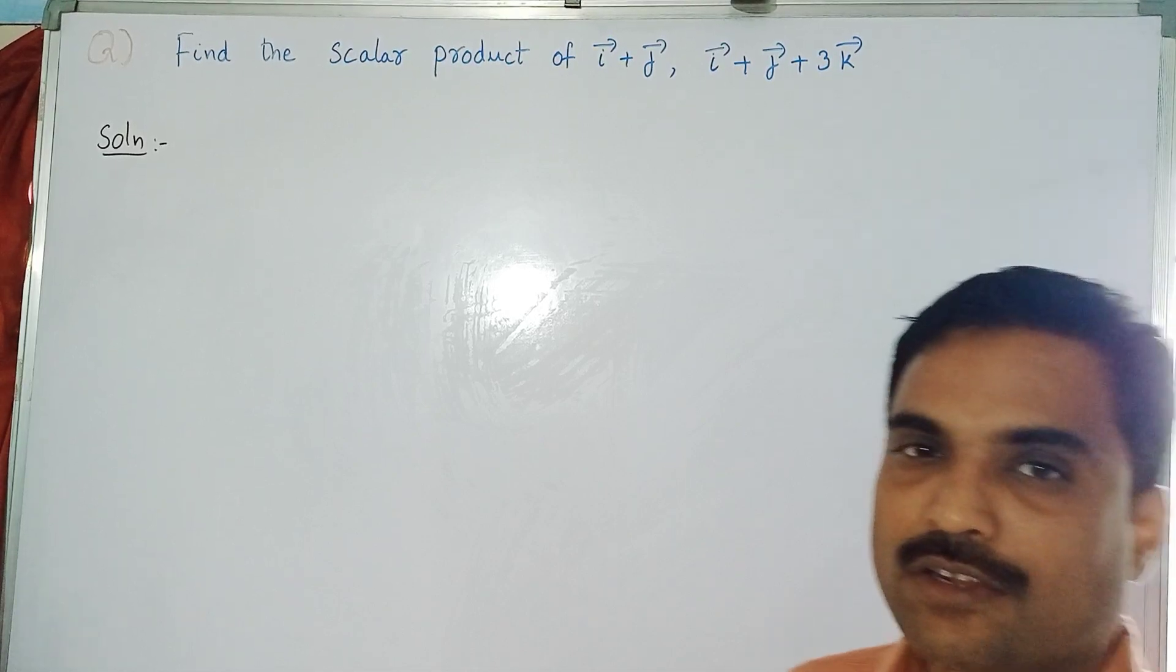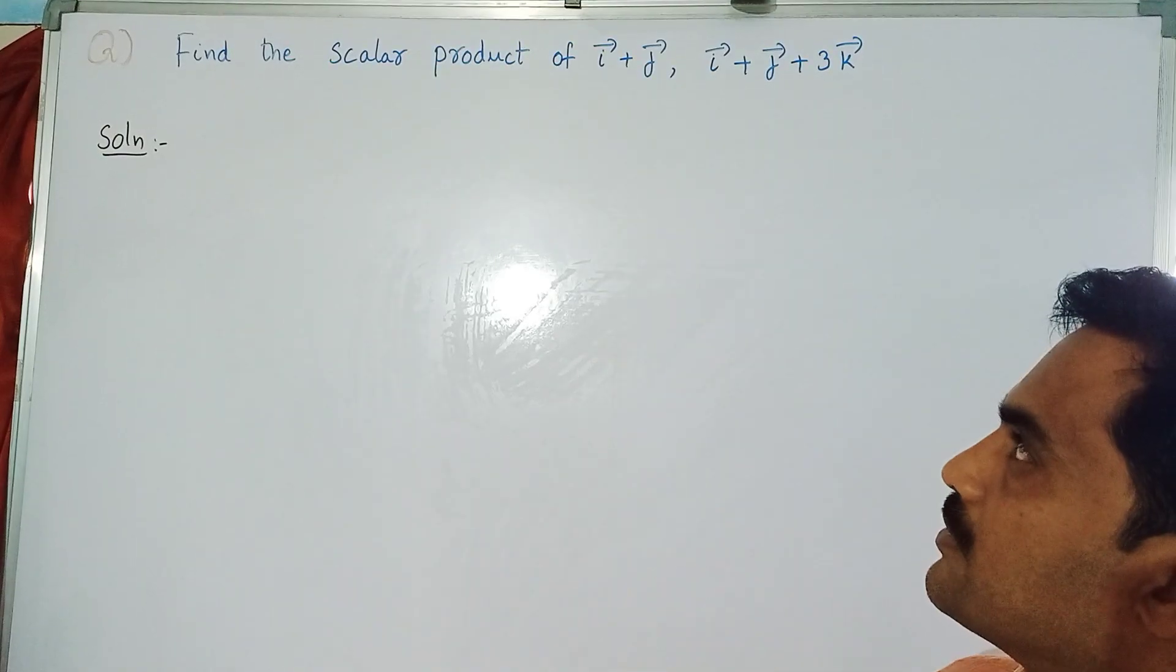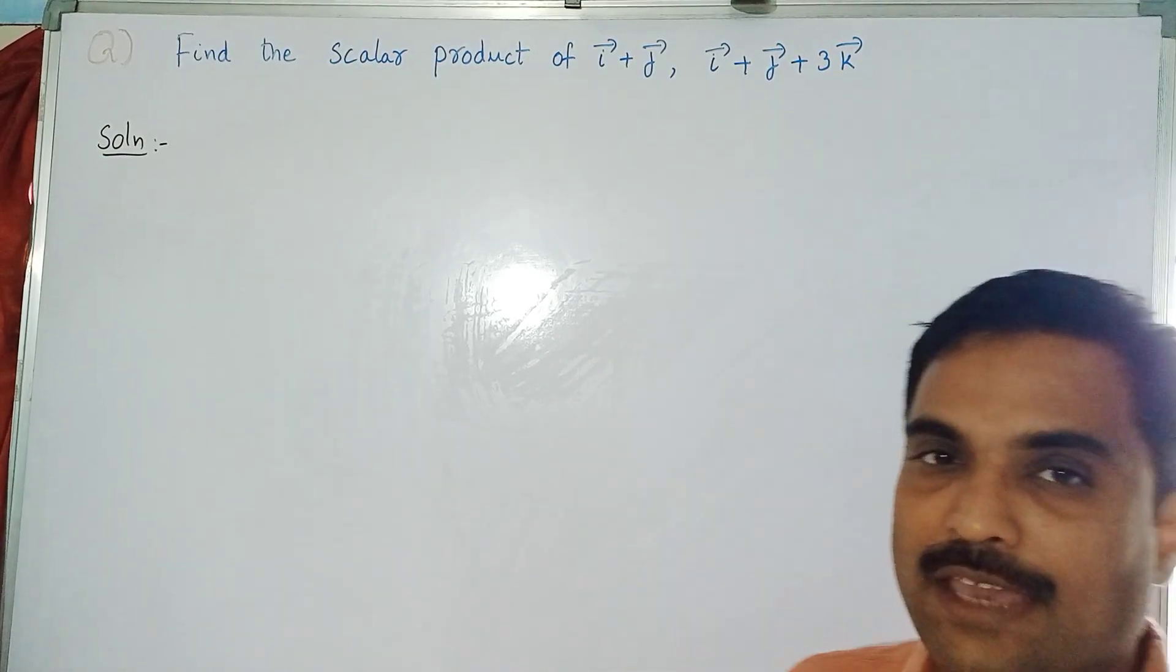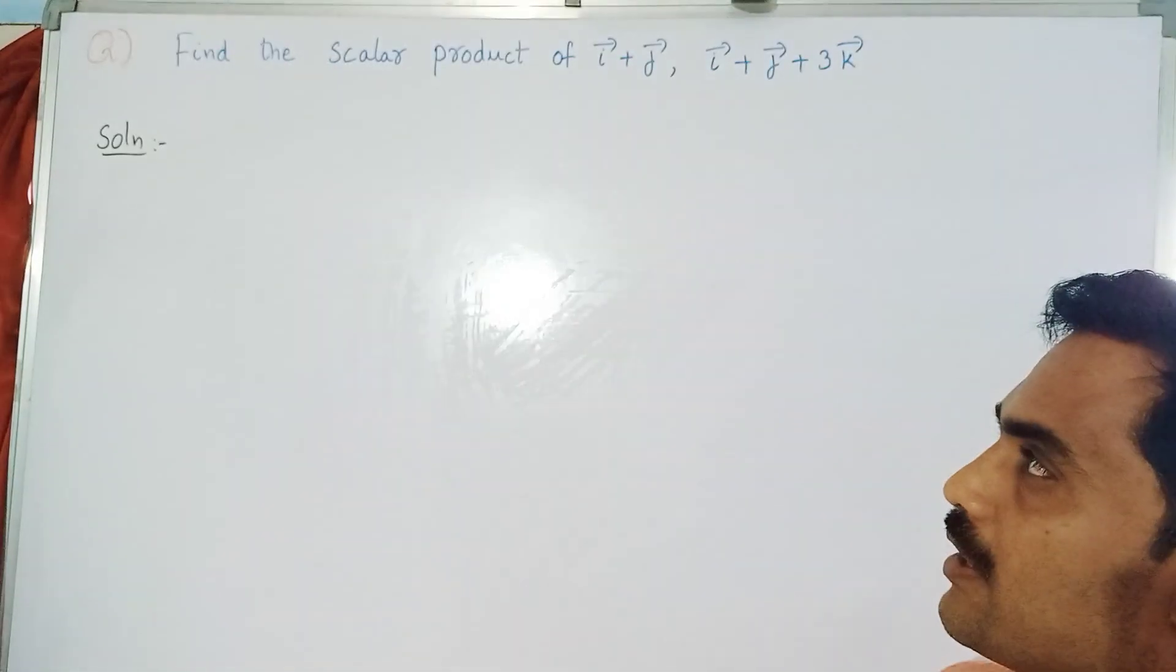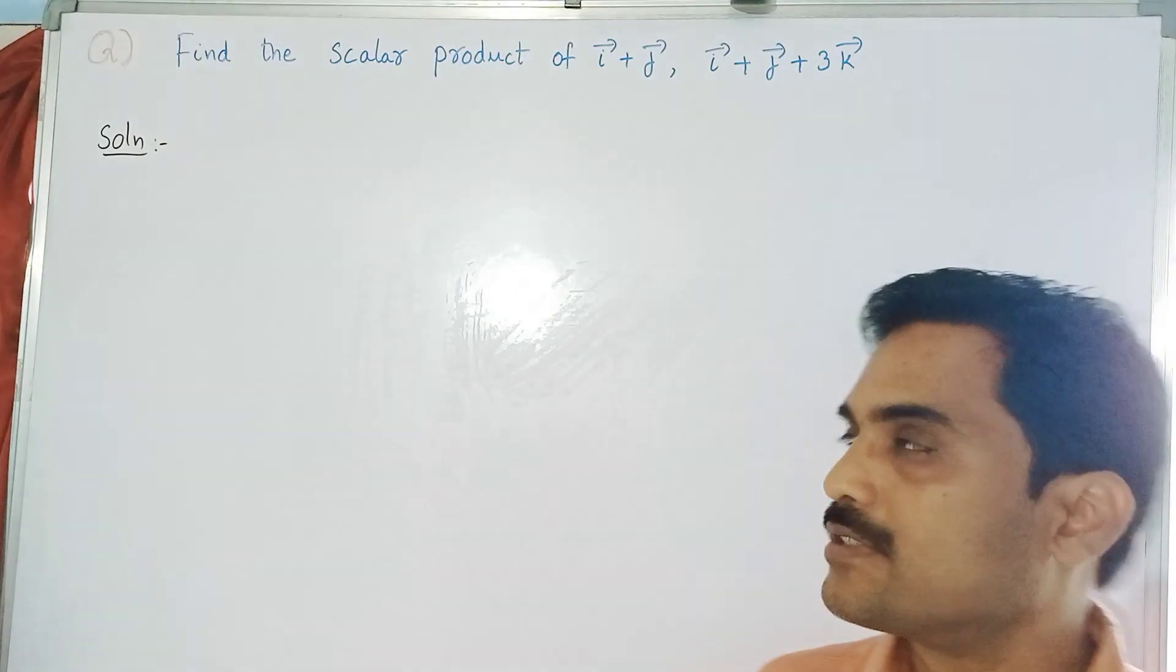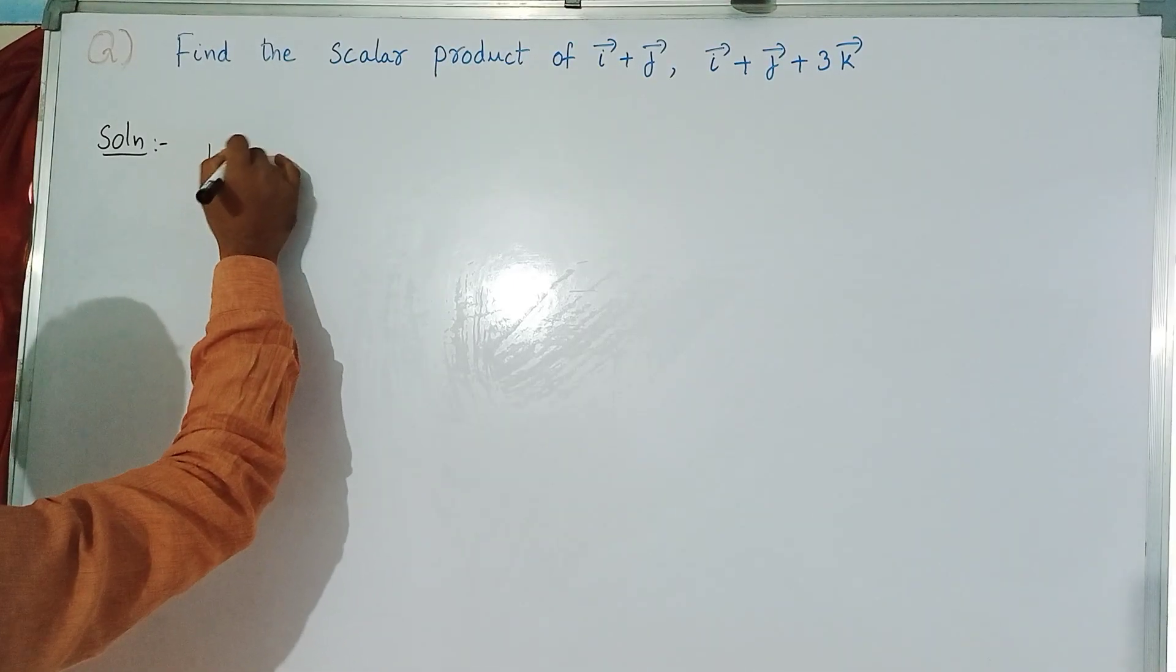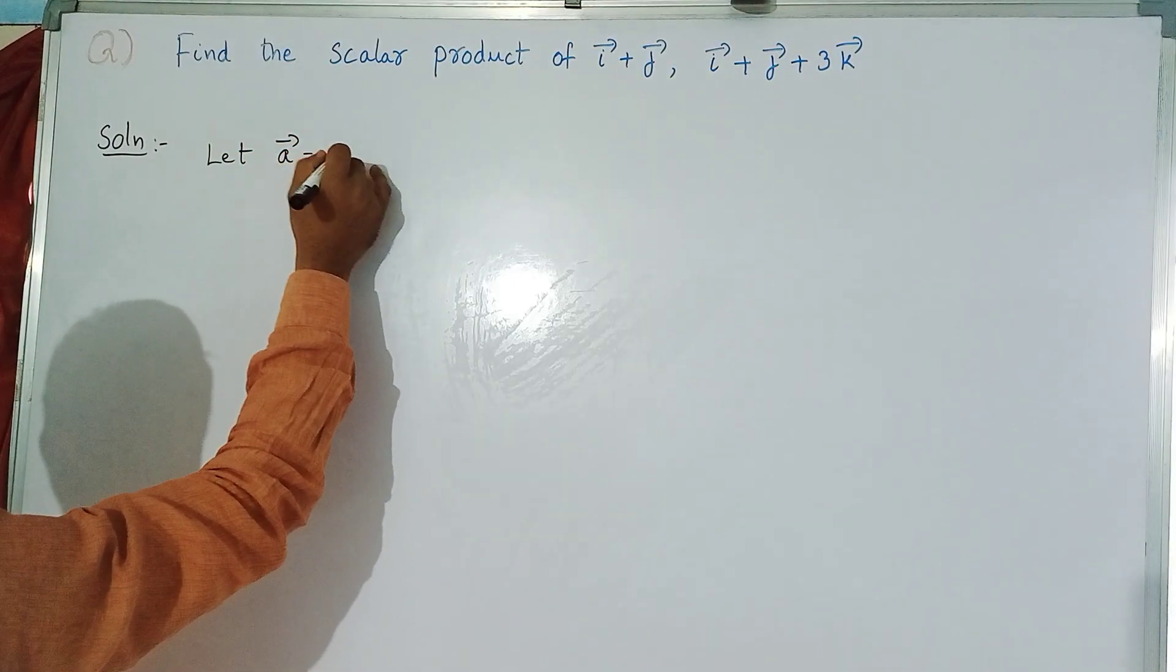In this problem they have given two vectors. We have to take the first vector as a bar and the second vector as b bar, and we need to do scalar product between these two vectors. So let a bar equal to i bar plus j bar.